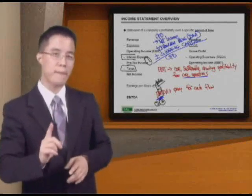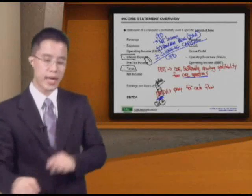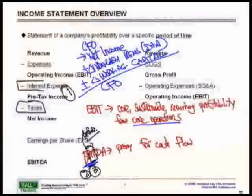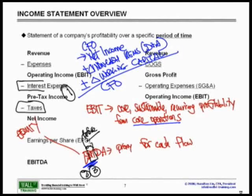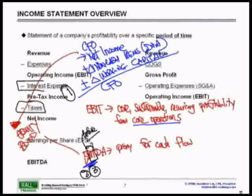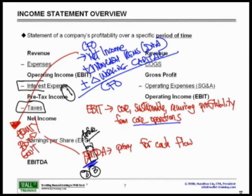But look at EBITDA — who has a claim on EBITDA? There are three parties: first, the equity holders because they haven't gotten paid yet and they have a stake on net income. The debt holders also have a claim on EBITDA because they have not yet been paid, as well as the government. These are the three stakeholders.